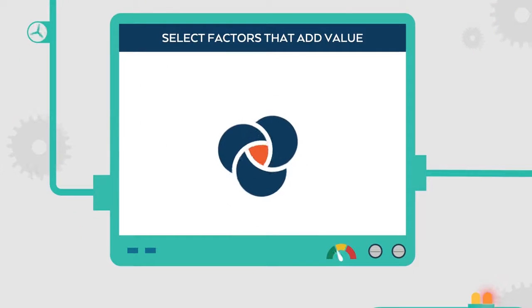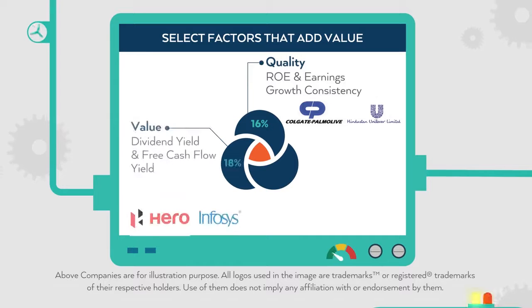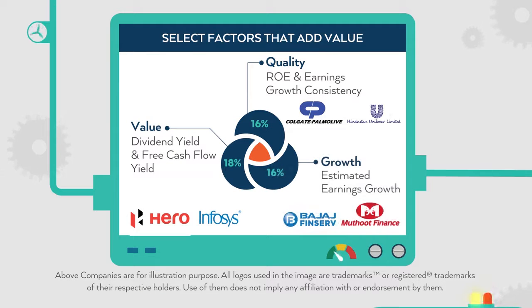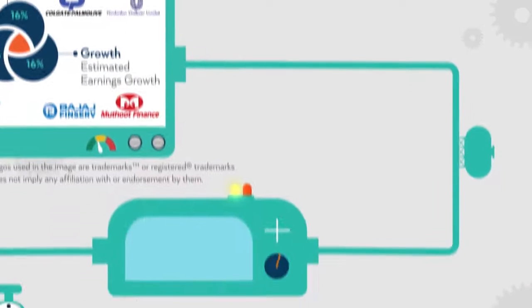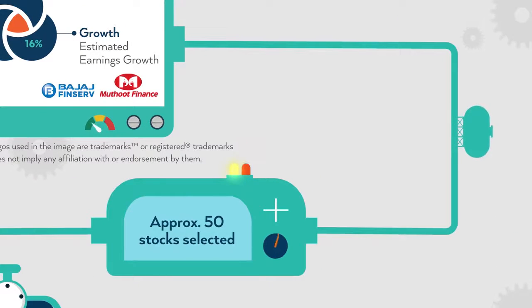In the selection phase, durable sources of alpha include factors such as quality, value, and growth, which have demonstrated long-term excess returns across geographies and market cycles. The end result: the selection of approximately 50 good companies.